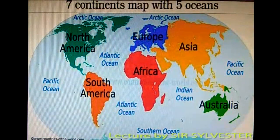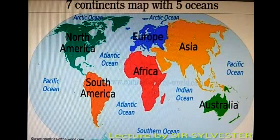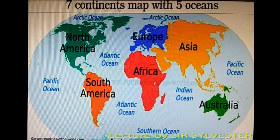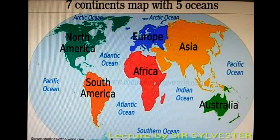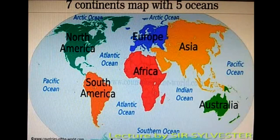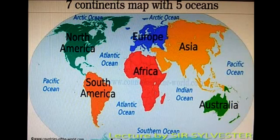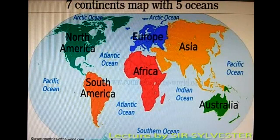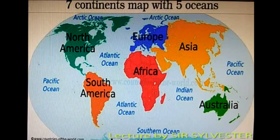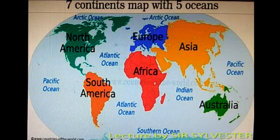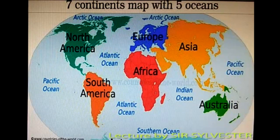The Earth is further divided into continents. We have seven continents and five oceans. The seven continents are North America, South America, Europe, Africa, Asia, Australia, and southernmost we have Antarctica. The five oceans are the Arctic Ocean, the Pacific Ocean, the Atlantic Ocean, the Indian Ocean, and the Southern Ocean.